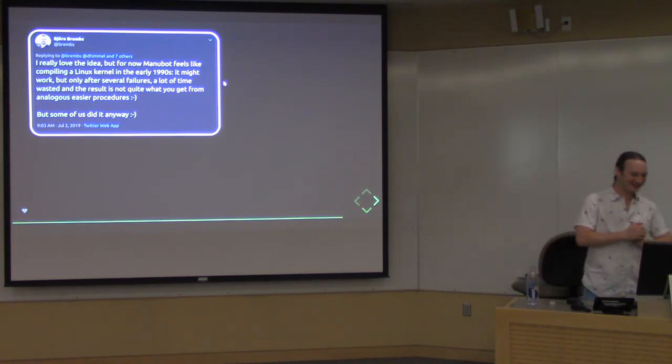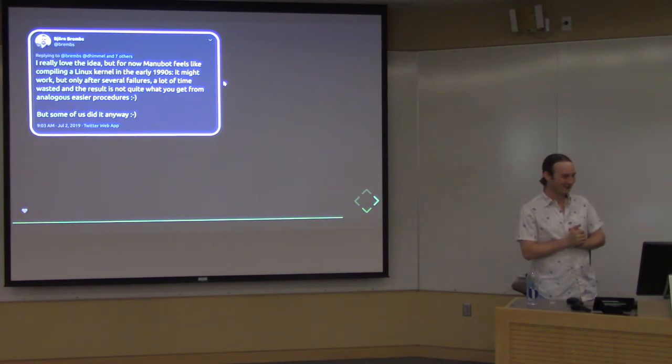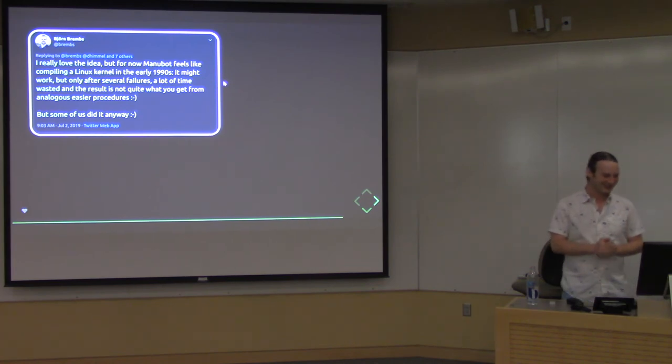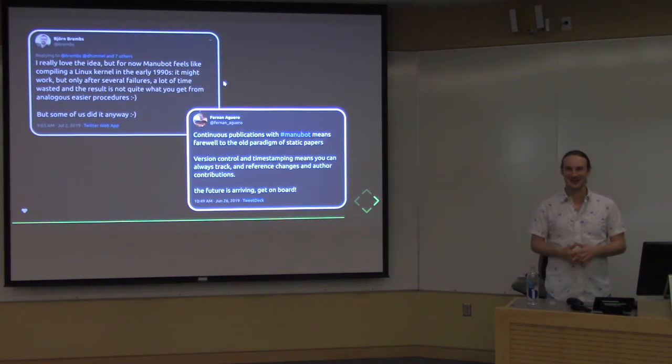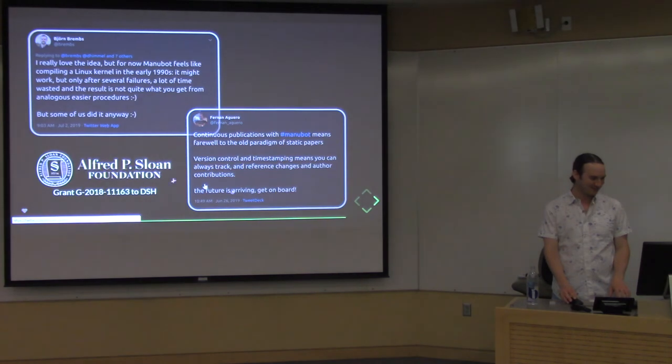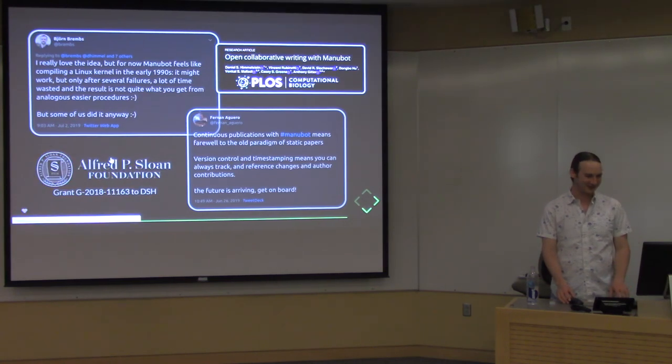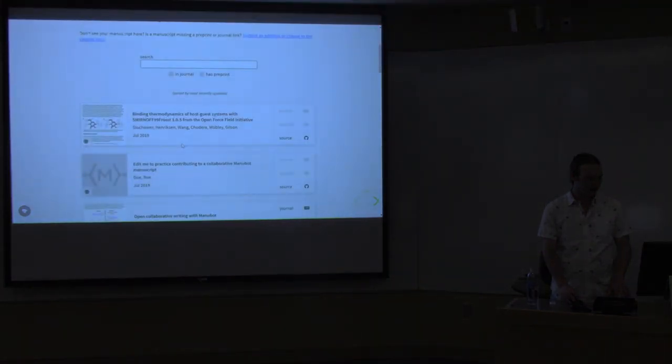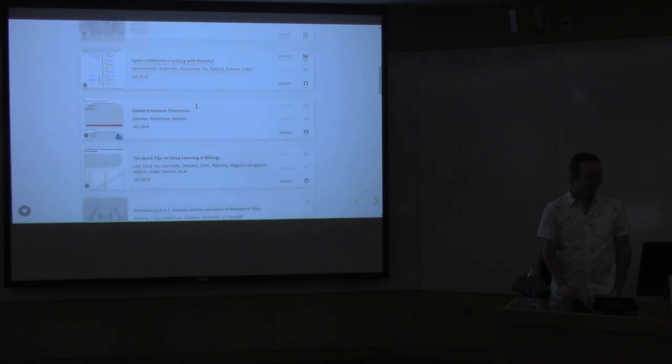It uses something called CSL, which thousands of journals already have these styles. If your paper got rejected, I'm sorry, and if you need to submit to a new journal, you can just switch one URL and it'll remake it with a totally different style. Not all the feedback is positive. This Twitter commentator says, 'I love the idea, but for now Manubot feels like compiling a Linux kernel in the early nineties. It might work but only after several failures, a lot of time wasted, and the result is not quite what you get from analogous easier procedures. But some of us did it anyways.' It is a bit complicated, although we've improved it a lot since then and removed some of the pain points. This person says continuous publication with Manubot means farewell to the old paradigm of static papers, version control and timestamping. The future is arriving, get on board. I have a small grant from the Sloan Foundation for this work, and that's allowing us to make it more user-friendly each week. A lot of new manuscripts have come out since this was published just a couple weeks ago. We actually have a catalog now so you can see papers that have been authored using Manubot.